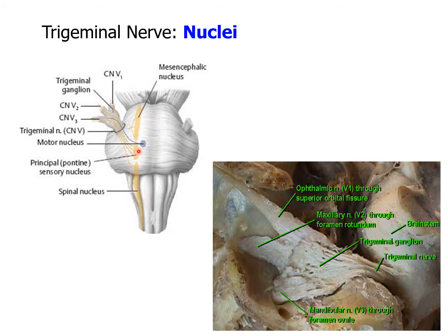At the level of the pons, the sensory nuclei merge to form a sensory root, and the motor root develops from the motor nucleus separately. These motor and sensory roots of the trigeminal nerve are comparable to the dorsal and ventral roots of the spinal nerves, which are sensory and motor respectively. Within the middle cranial fossa, the sensory nuclei merge to form a sensory root and expand as the trigeminal ganglion.